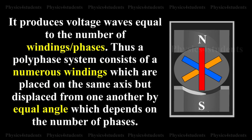It produces voltage waves equal to the number of windings or phases. Thus, a polyphase system consists of numerous windings which are placed on the same axis but displaced from one another by equal angles which depend on the number of phases.